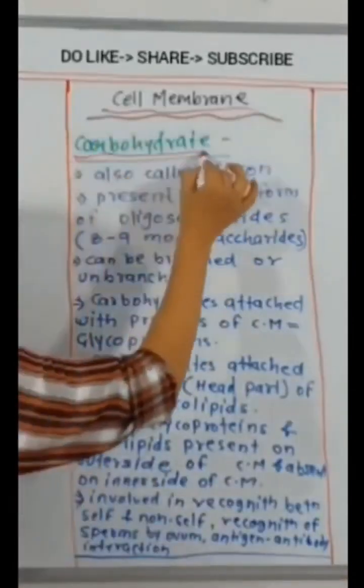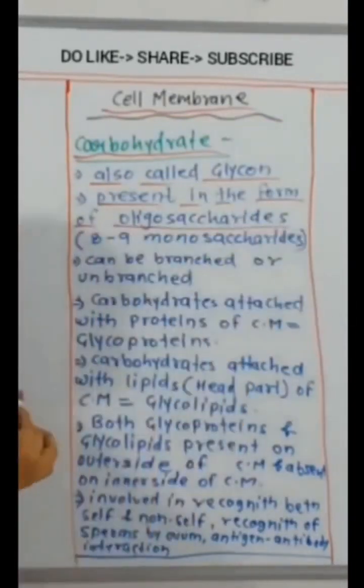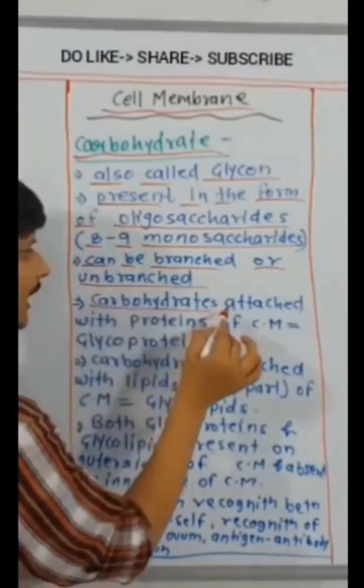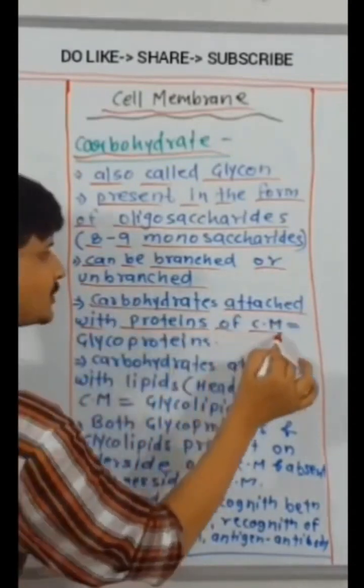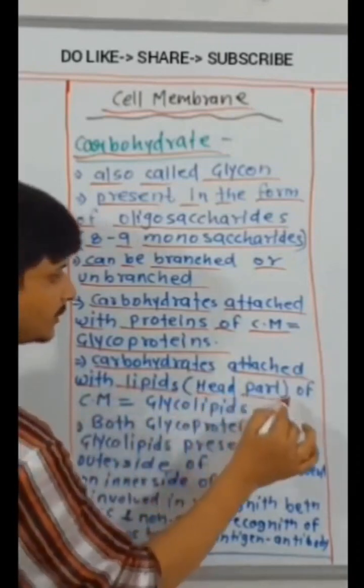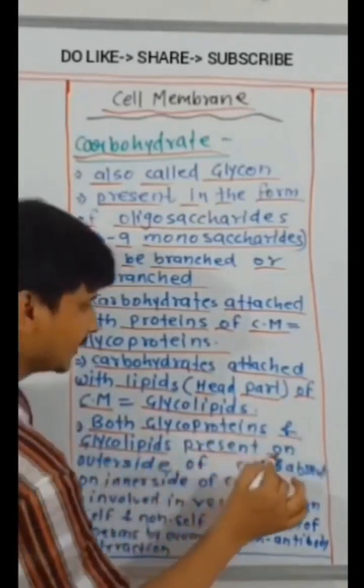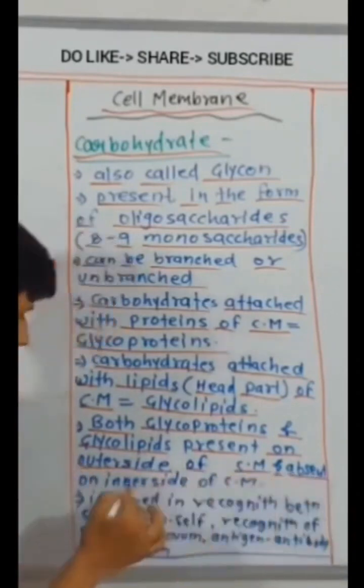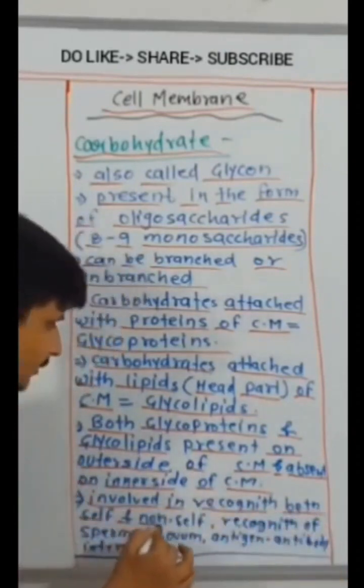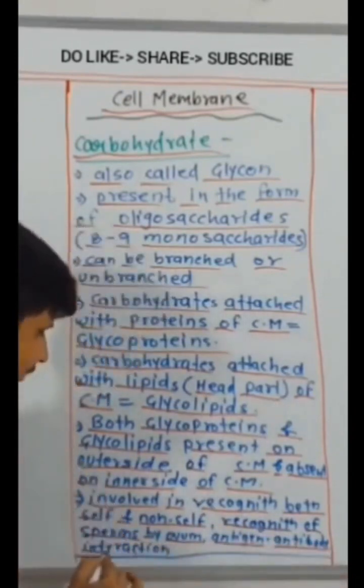Carbohydrate, also called glycan, present in the form of oligosaccharides, eight to nine monosaccharides, can be branched or unbranched. Carbohydrates attached with proteins of cell membrane called glycoproteins. Carbohydrates attached with lipids head part of cell membrane called glycolipids. Both glycoproteins and glycolipids present on outer side of cell membrane and absent on inner side. Involved in recognition between self and non-self, recognition of sperms, ovum, antigen-antibody interaction.